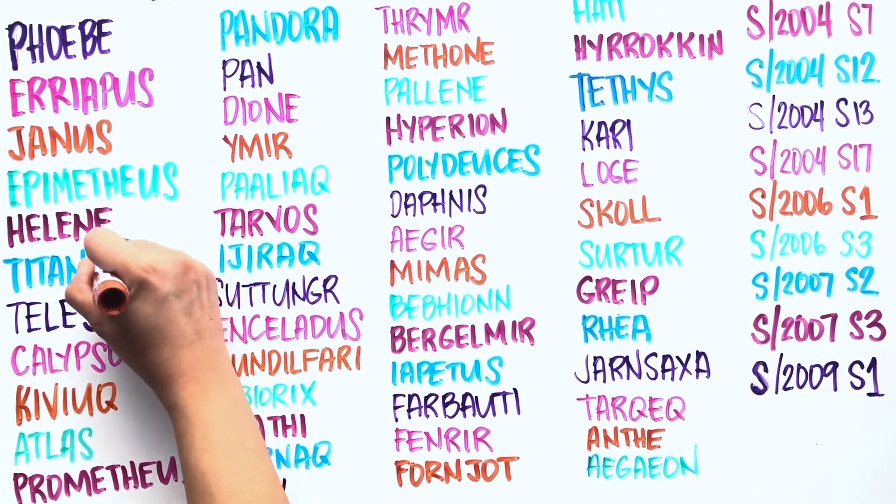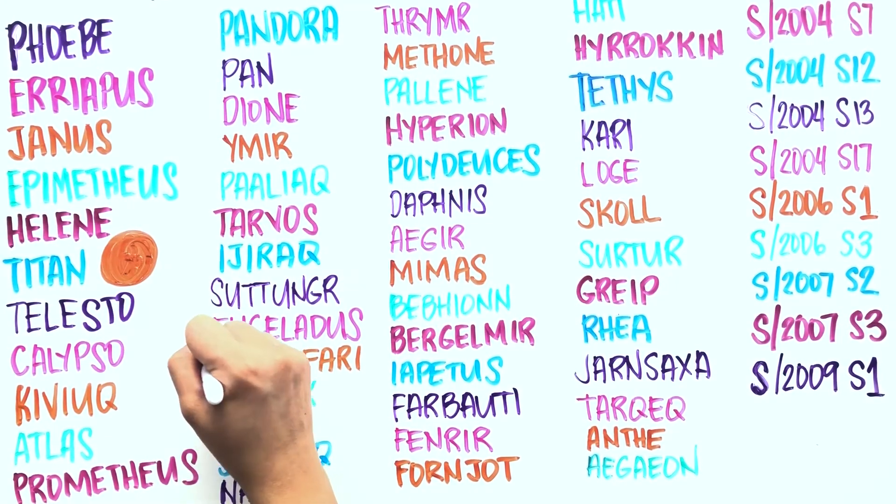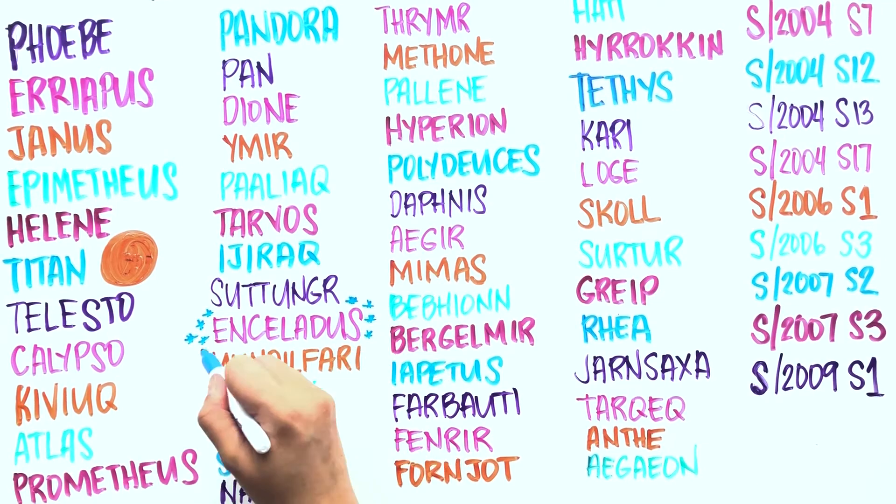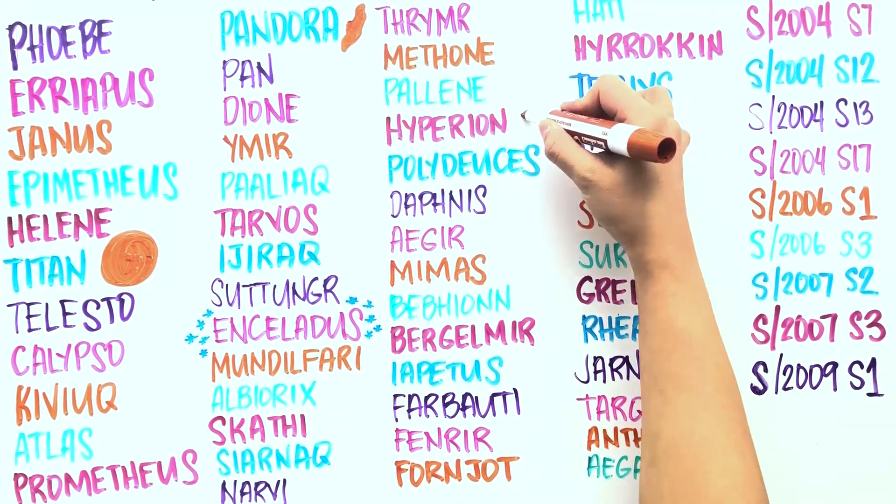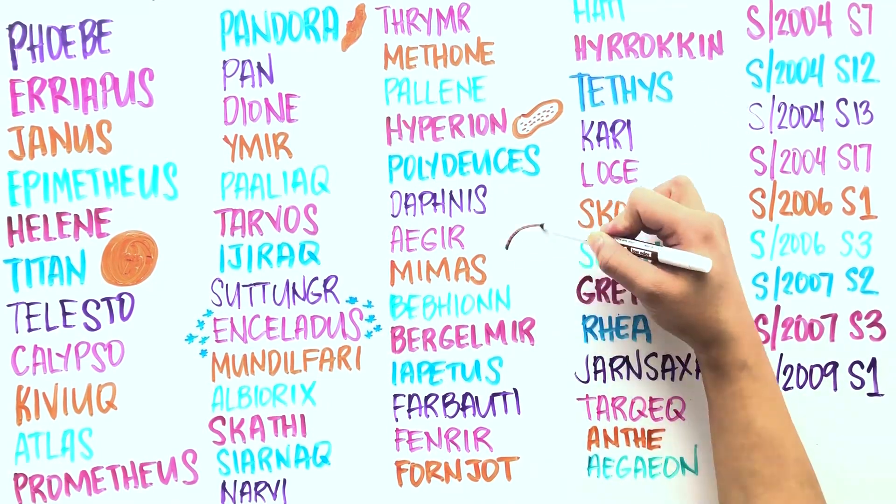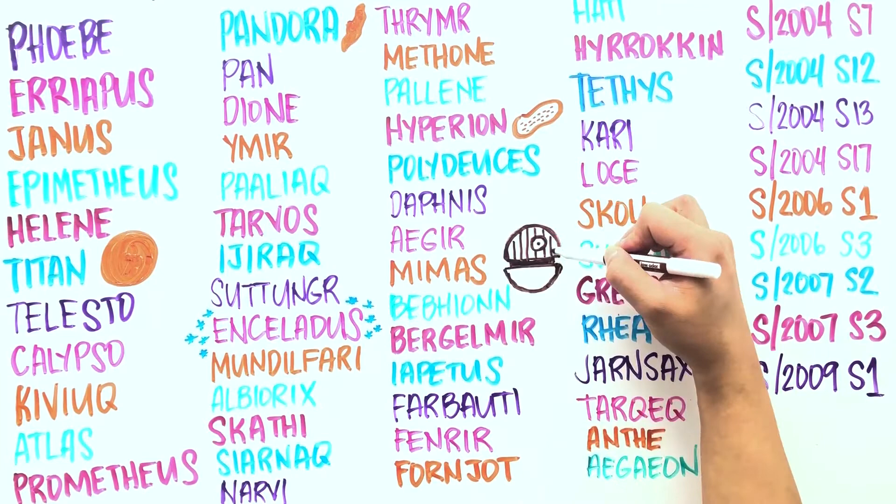To name a few: Titan is Saturn's largest moon. Enceladus is covered by ice, making it one of the most reflective bodies in the solar system. Pandora looks like a potato, Hyperion looks like a sponge, and Mimas looks like a Death Star.